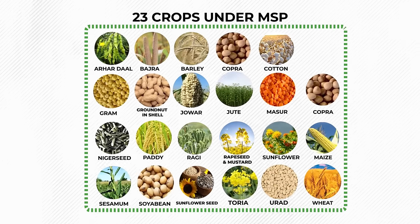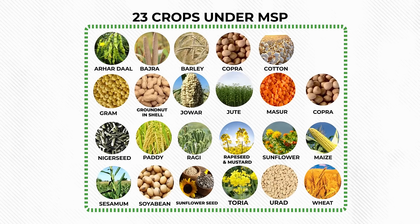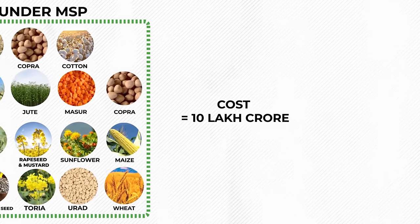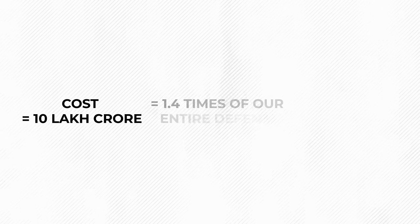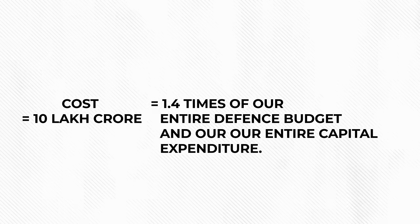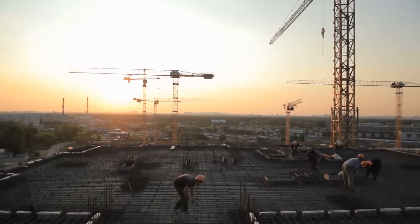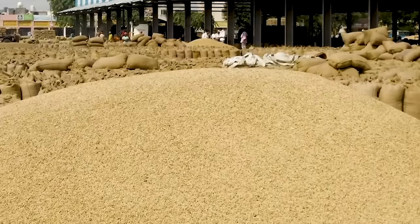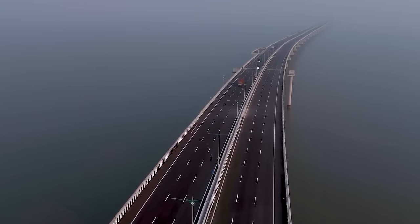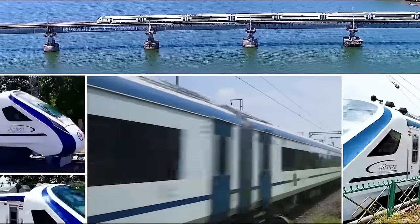Secondly, even if we stick to just 23 crops under MSP, the cost to the government would still be close to 10 lakh crores — which is 1.4 times our entire defense budget and our entire capital expenditure. So the capital expenditure budget currently being used to build infrastructure in India will be used to procure just crops at MSP. Instead of constructing new bridges, airports, and Vande Bharat trains, this money will go into the implementation of MSP procurement.